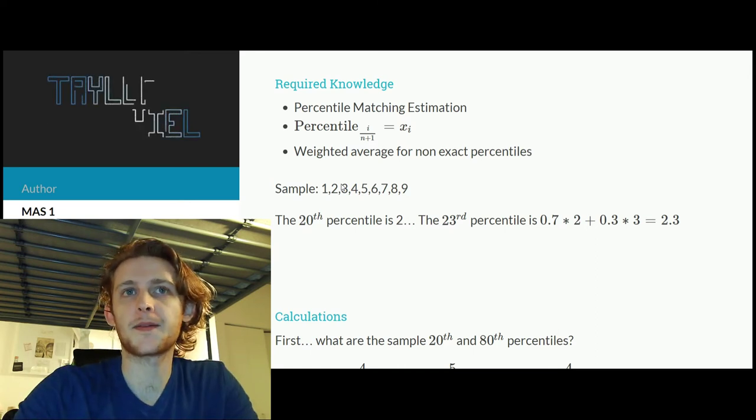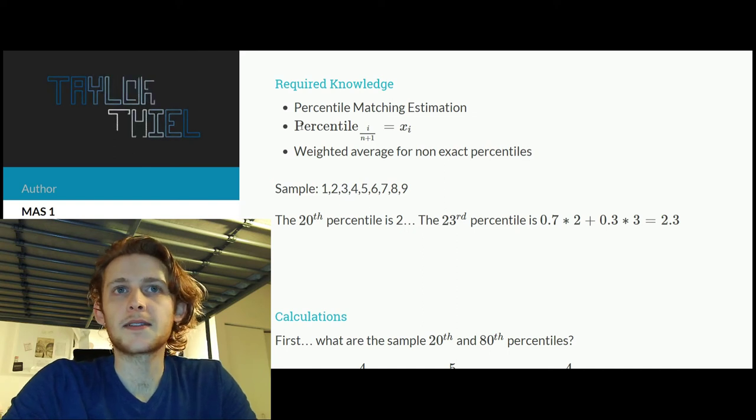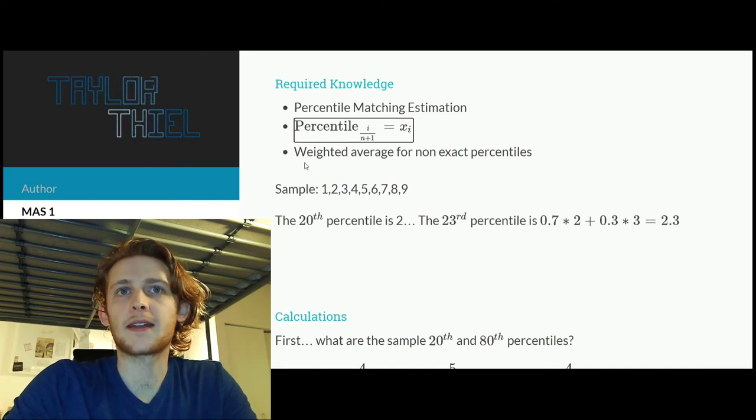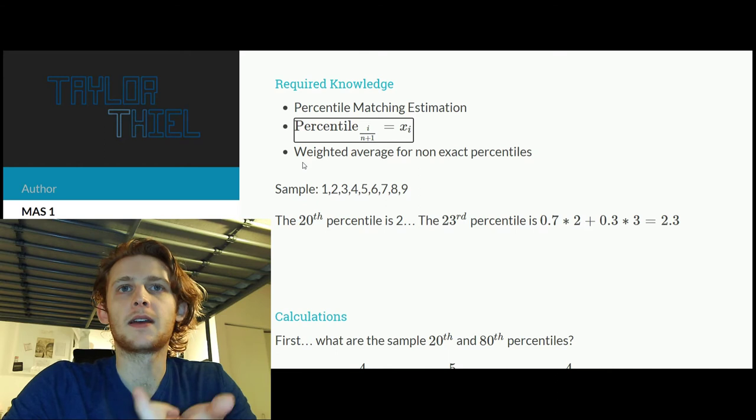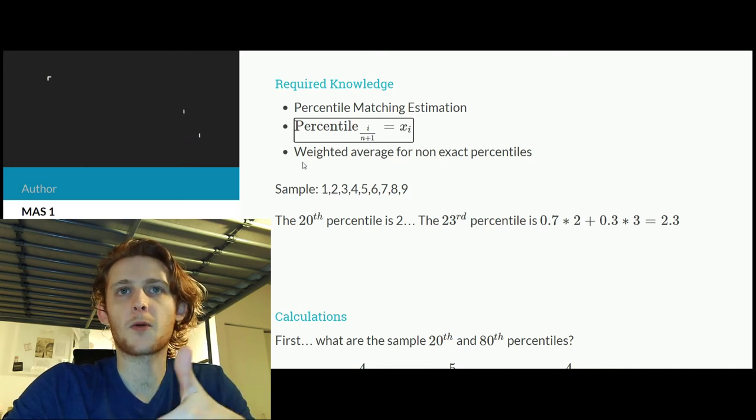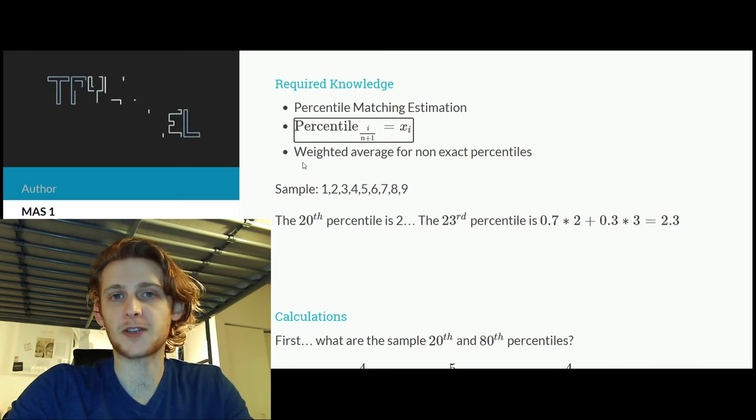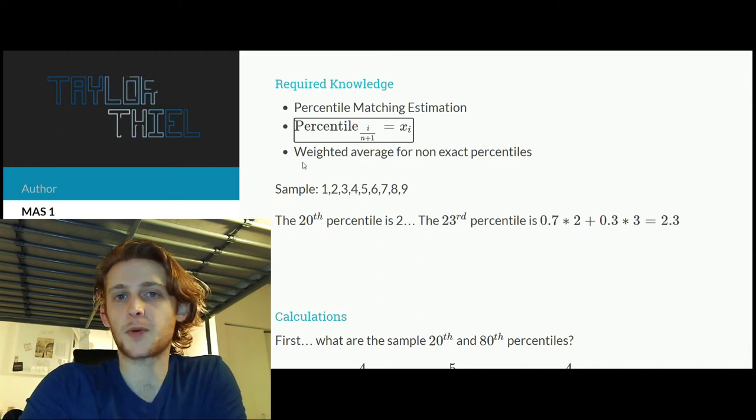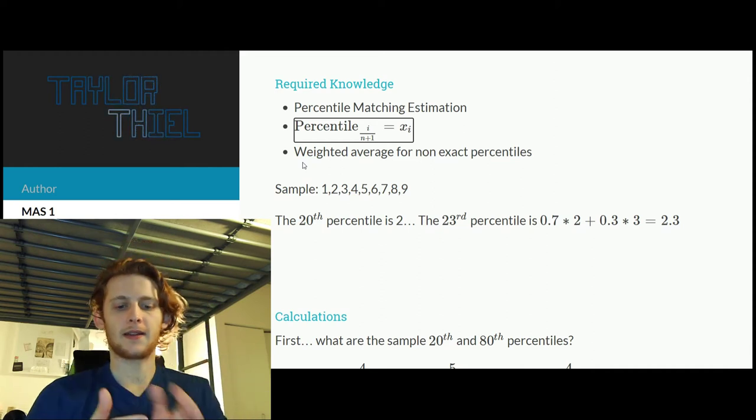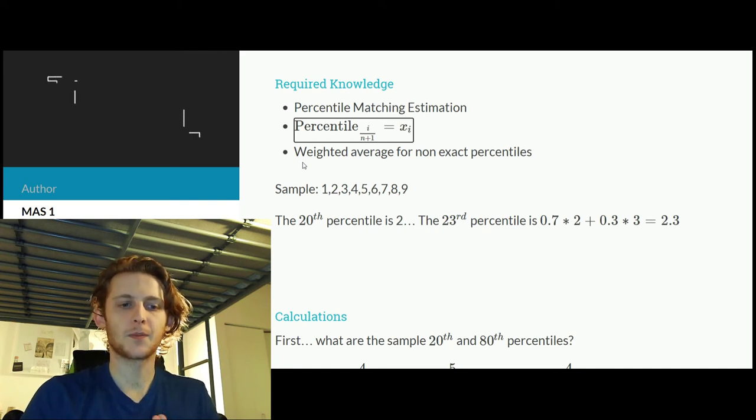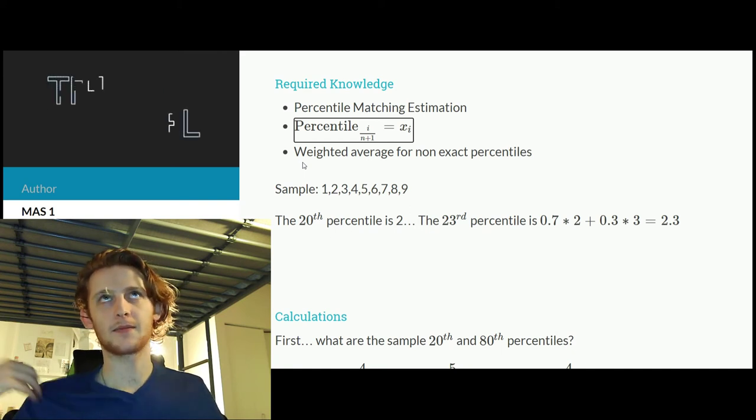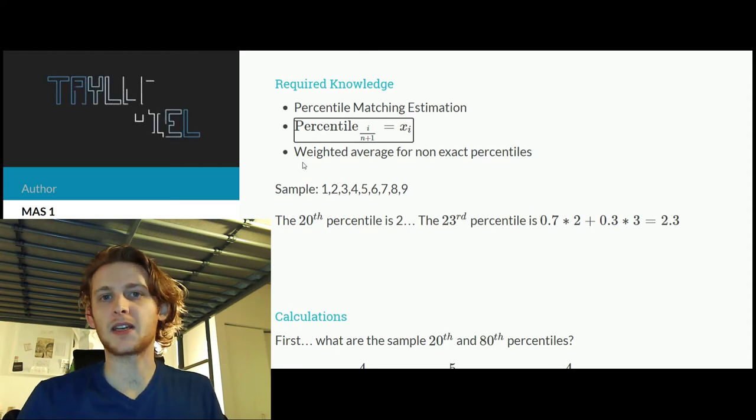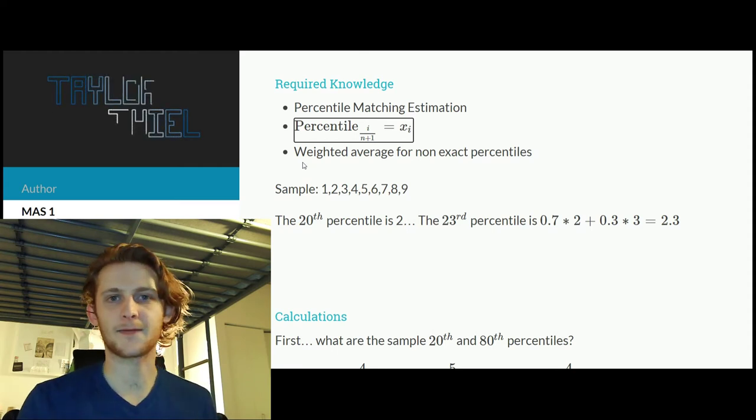And that's why they give you the 20th and 80th percentile and not just say the median, so that you can then apply systems of equations here. Next, you need to know that for a percentile estimation it's going to be the rank order divided by the total number of sample observations plus one.